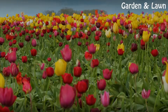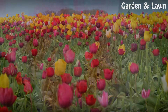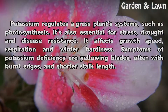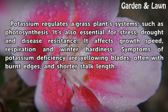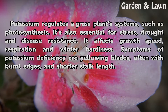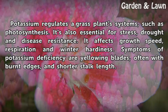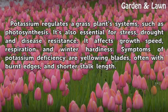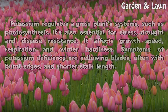Potassium regulates a grass plant's systems such as photosynthesis. It is also essential for stress, drought, and disease resistance. It affects growth speed, respiration, and winter hardiness. Symptoms of potassium deficiency are yellowing blades, often with burnt edges, and shorter stock length.